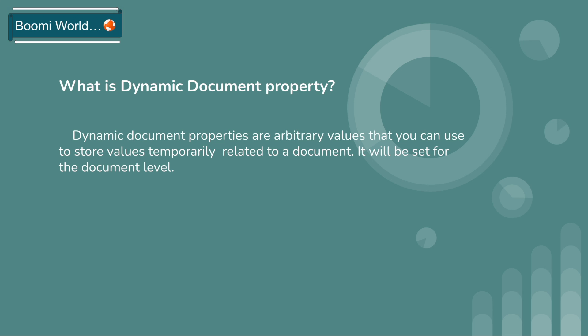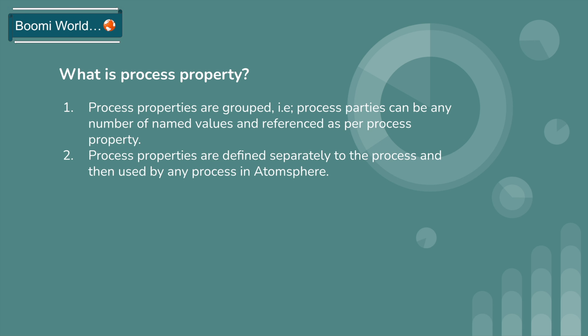What is dynamic document property? Dynamic document properties are arbitrary values that you can use to store values temporarily related to a document. They are set at the document level. So if you want to store any document values temporarily, you can use dynamic document property.